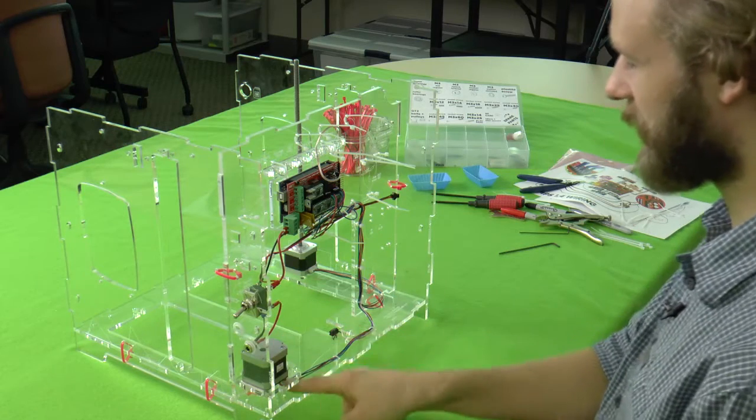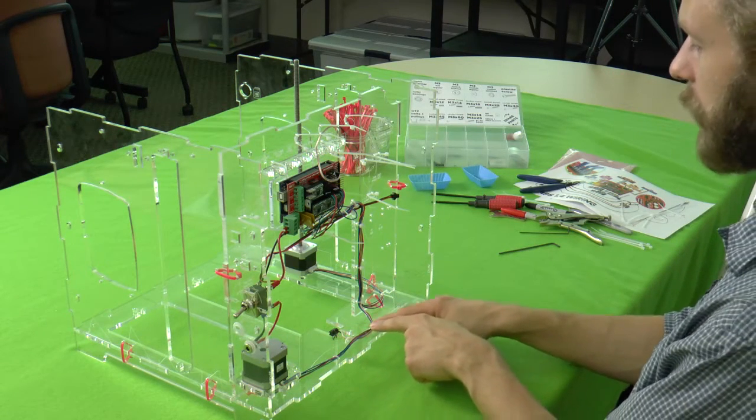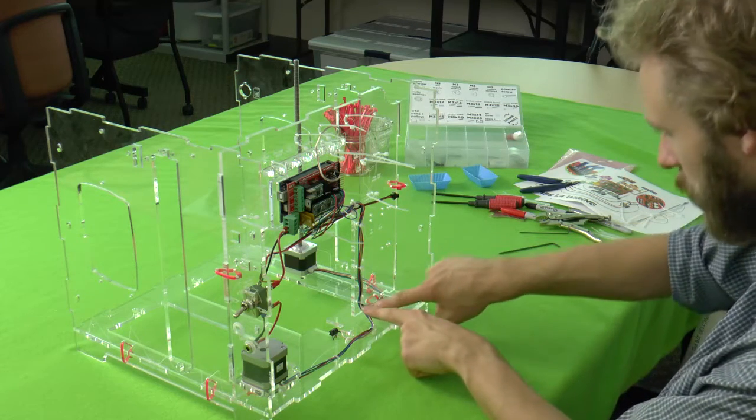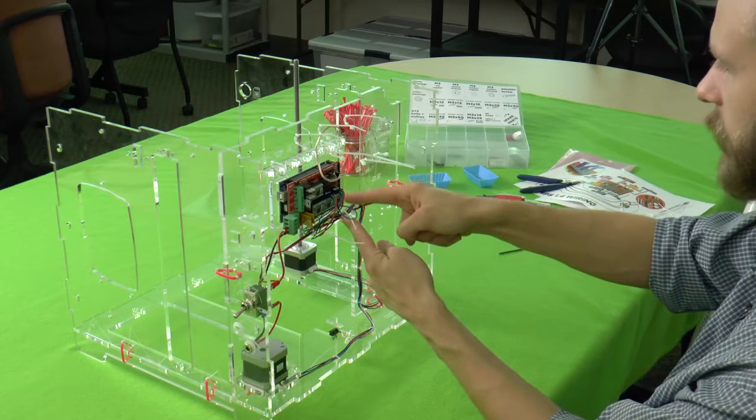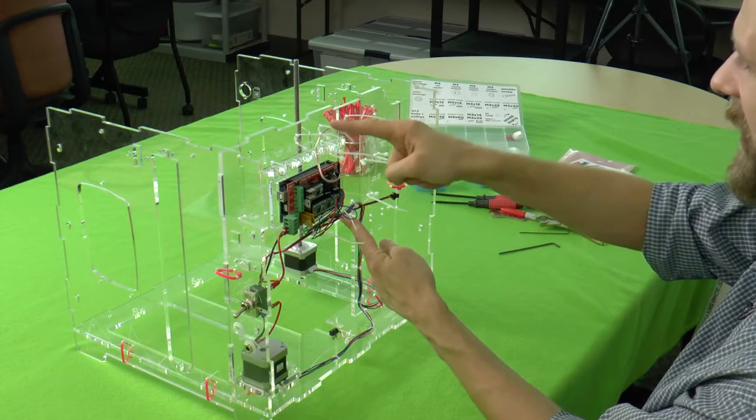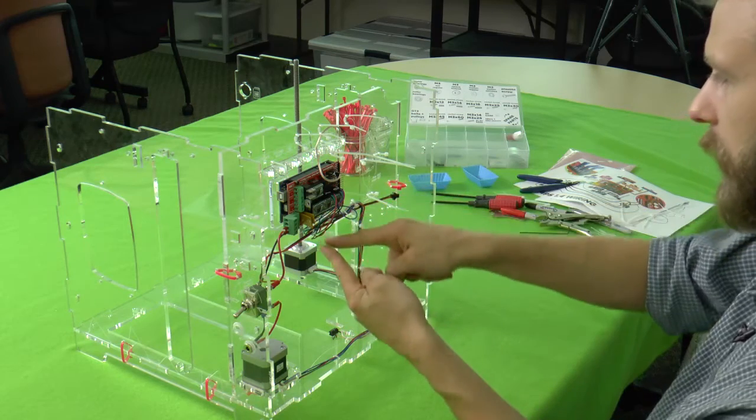The Y wire starts right here, runs on the bottom, joins together with the Y end stop wire, and here they join with the Z motor wire. They go together for a bit, then the Y end stop wire splits and joins the board from the top while the Z and Y motor wires go from the bottom.